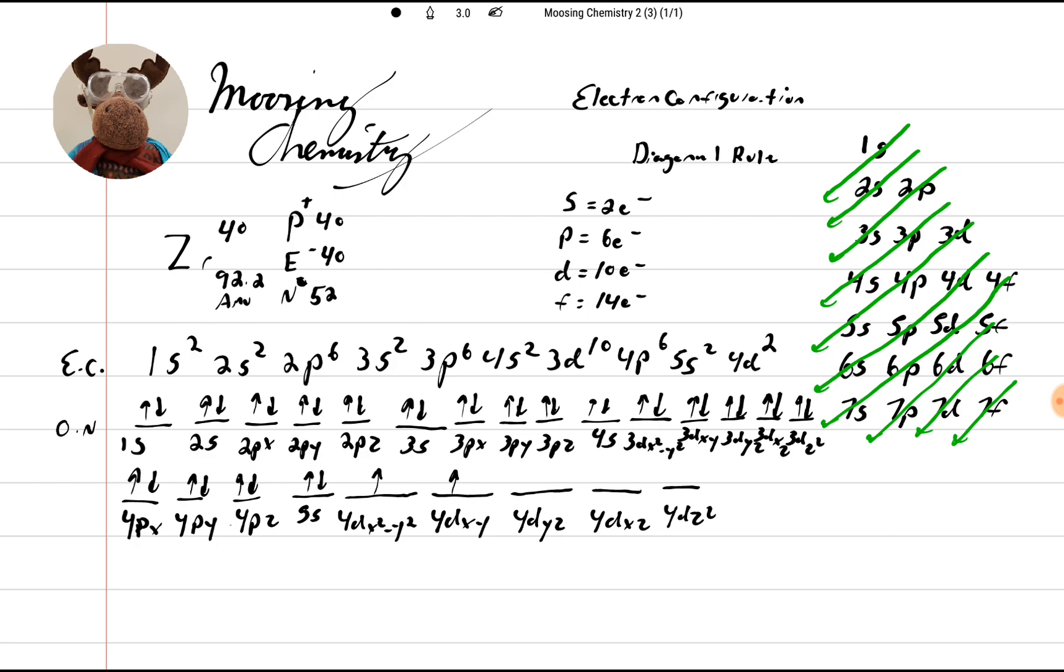And the last one we're going to do in this particular electron configuration is our noble gas notation. I call it the NGN, noble gas notation. The beautiful thing about this is you can look up here and you can see the nearest noble gas to zirconium is krypton, Kr. And so, guess what? We'll just go Kr.